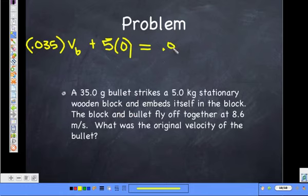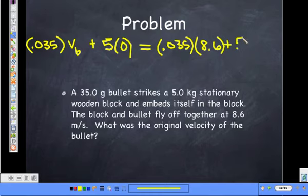Equals 0.035 times what? 0.035. Okay, plus what? 5. Right, they both have 8.6 as their velocity. So what do we get for the original speed of the bullet?